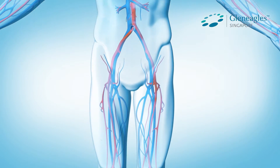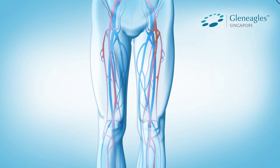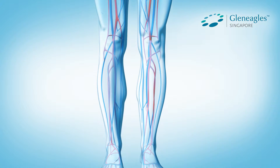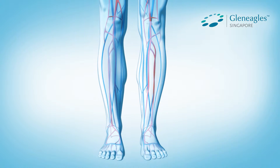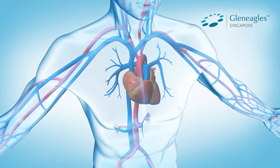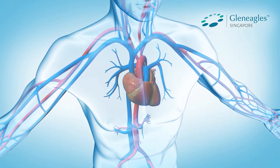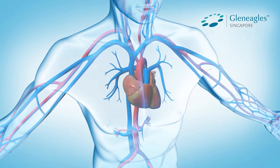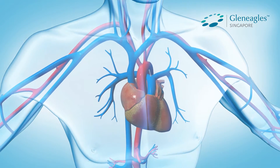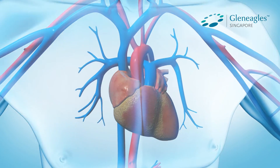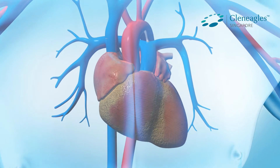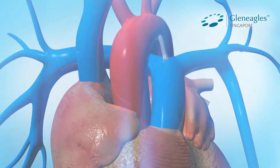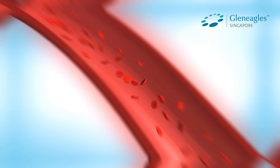Blood also functions to remove dangerous wastes from the body. Continuous supply of oxygen-rich blood to the heart muscle via the coronary arteries is important for optimal function of the heart.